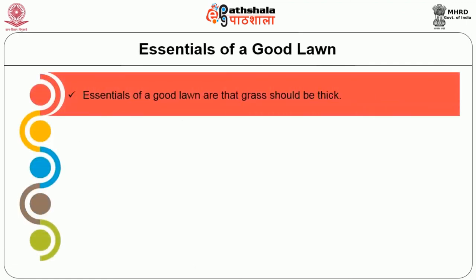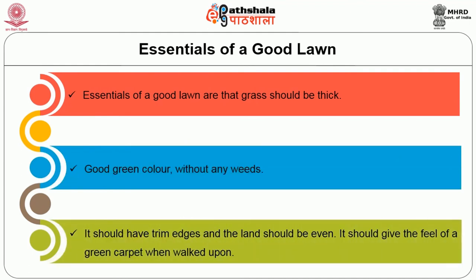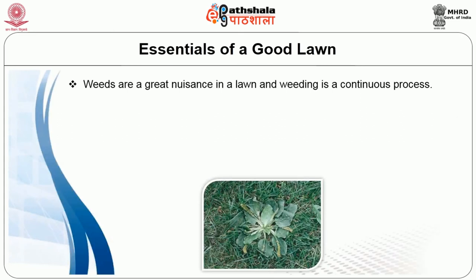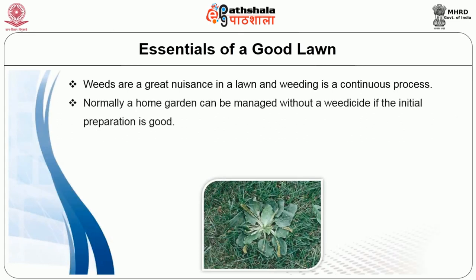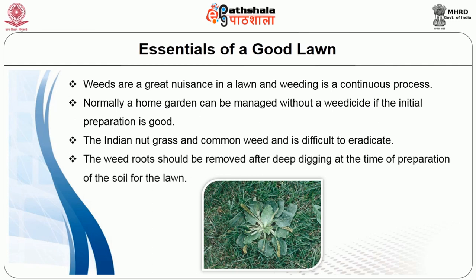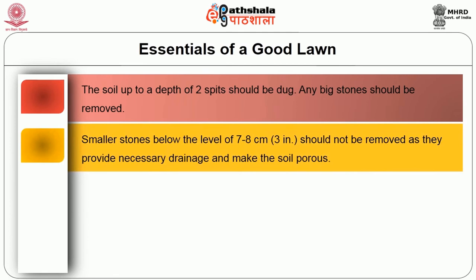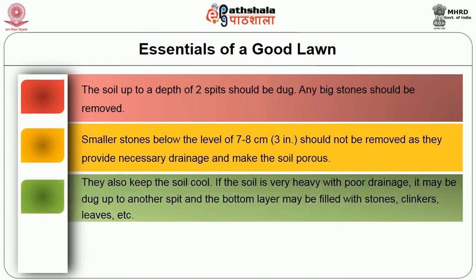Essentials of a good lawn: the grasses should be thick, good green color without any weeds. It should give trim edges and the lawn should be even. It should give the feel of a green carpet when walked upon. Weeds are a great nuisance in the lawn and weeding is a continuous process. Normally a home garden can be managed without weedicide if the initial soil preparation is good. The Indian nut grass is a common weed and it is difficult to eradicate. The weed roots will be removed after deep digging at the time of preparation of the soil for the lawn. The soil up to depth of two spits should be dug. Any big stones should be removed. Smaller stones below 7 to 8 cm should not be removed as they provide necessary drainage and make the soil porous. They also keep the soil cool.